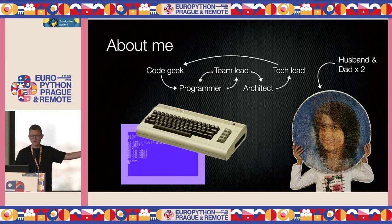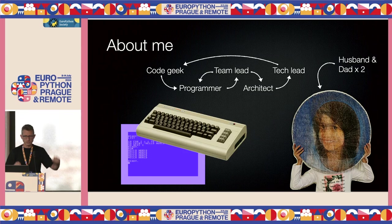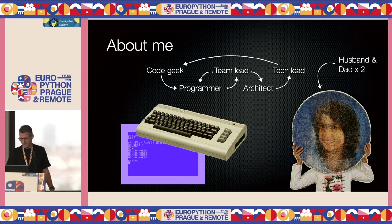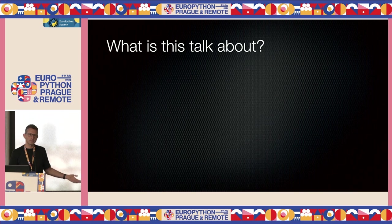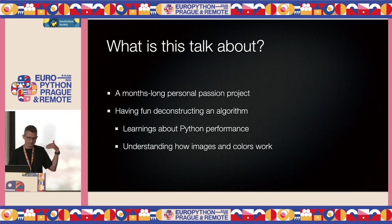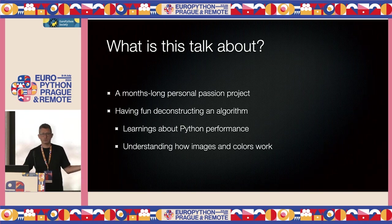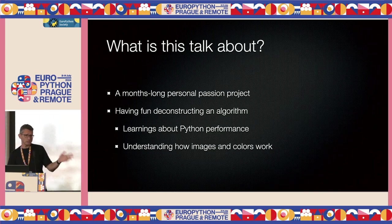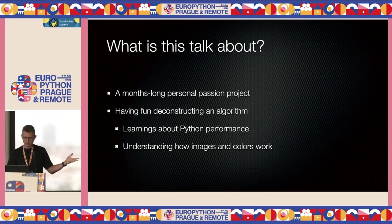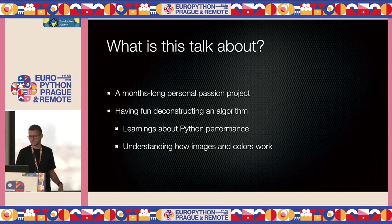That's her in strings — this is an actual canvas with strings that are stretched. In reality her head is much more proportional to her body, but I hope you get the idea. So what's this talk about? Why are we here? This is about a project that I started which was going to take a weekend, and it was indeed a six-month long weekend. We're going to have fun with algorithms, talk a bit about performance, and about colors since this algorithm deals with images.